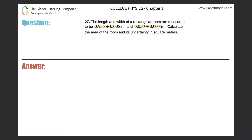Okay, first thing let's just draw a quick picture. So we have a rectangular room. One side measures 3.955 plus or minus 0.005 meters, and the other side measures 3.050 plus or minus 0.005 meters. So it's asking us to calculate the area and its uncertainty, so let's focus on the area first.